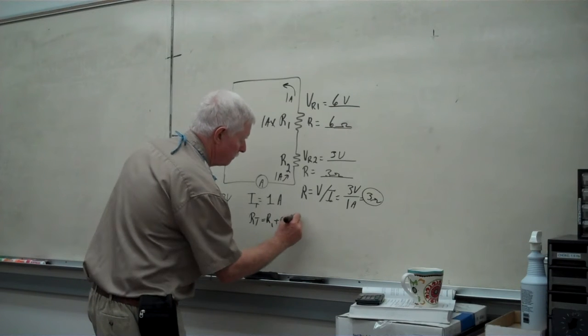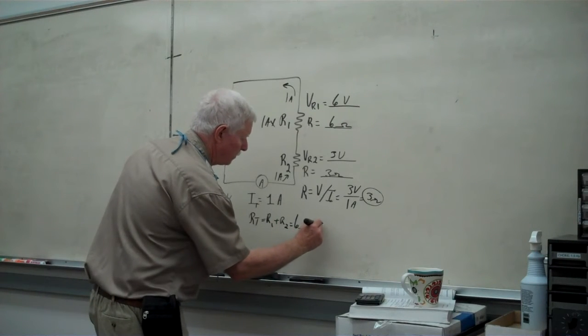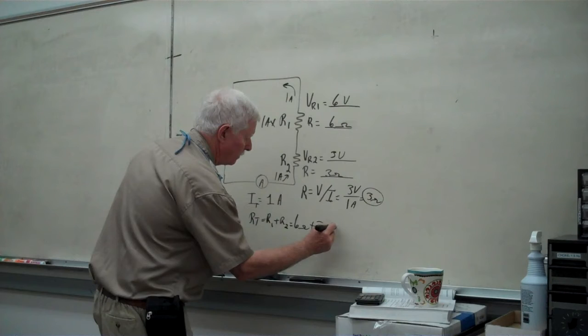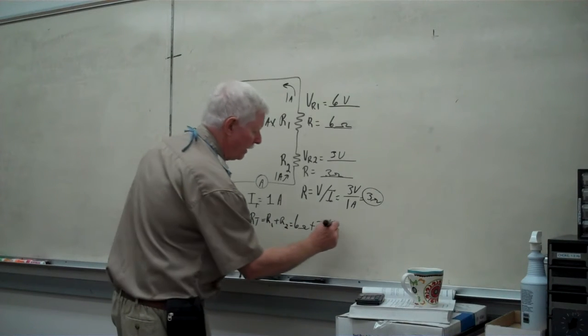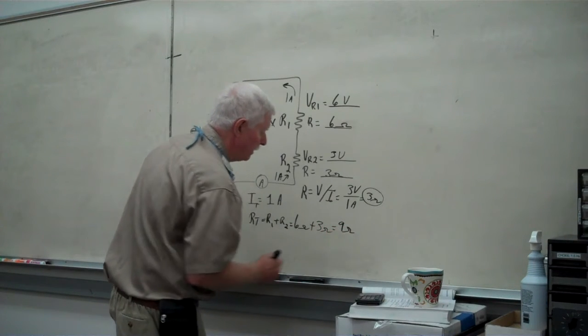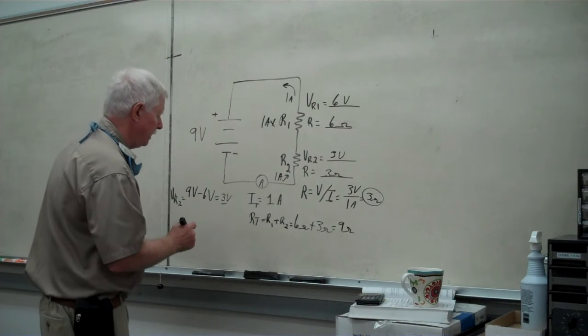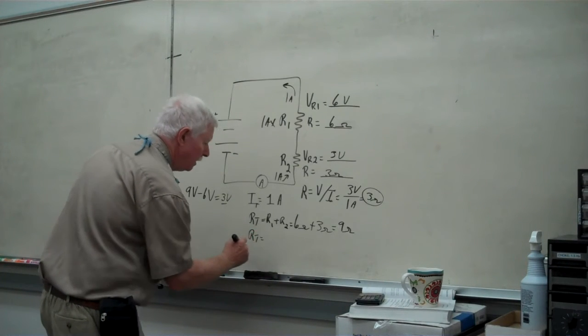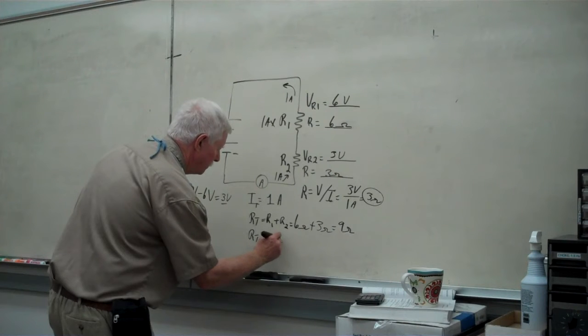So, here we have 6 ohms plus 3 ohms. And as we add those two together, we derive 9 ohms. So, now we know what R sub T is. So, R sub T here is going to be 9 ohms.